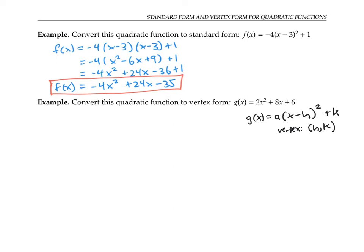To do this, it's handy to use the vertex formula. The vertex formula says that the x coordinate of the vertex is given by negative b over two a, where a is the coefficient of x squared, and b is the coefficient of x.